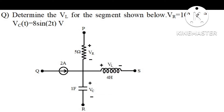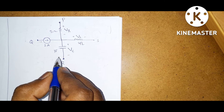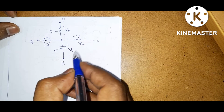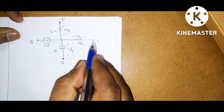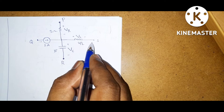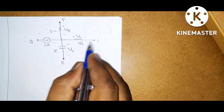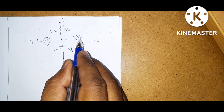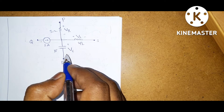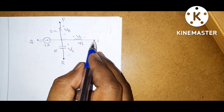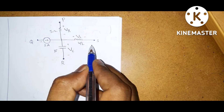Next question is: determine VL for the segment shown below, where Vr equals 10 volts and Vc equals 8 sin 2t volts. This is the given network. If you observe here, don't think R and S are ground terminals because these are separate nodes. If you think this is ground, Vc equals VL, so there is no meaning to the question. These are separate nodes.